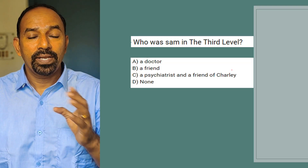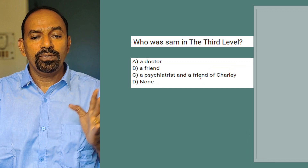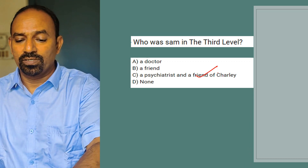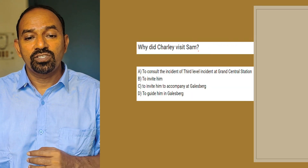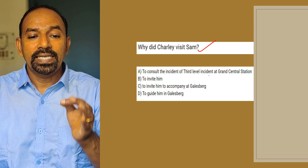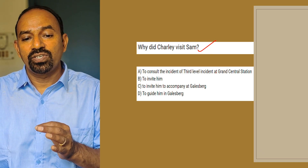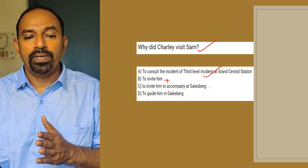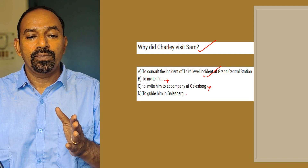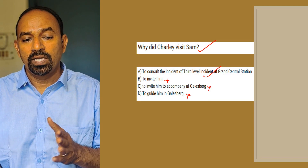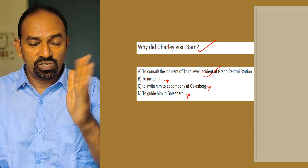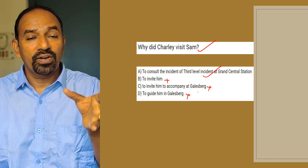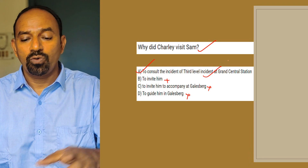Next question: Who was Sam in the third level? Sam is a psychiatrist and friend of Charlie — a direct factual answer. Next question: Why did Charlie visit Sam? Options: to consult about the third level incident at Grand Central Station; to invite him to accompany to Galesburg; to guide him in Galesburg. The purpose of Charlie's visit to Sam was to consult about the incident at Grand Central Station. So A is the right option.